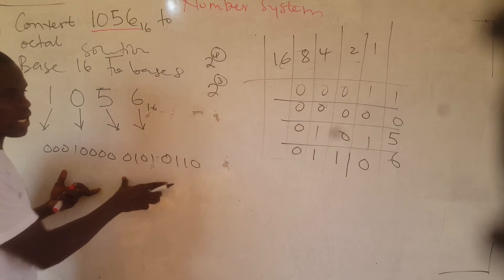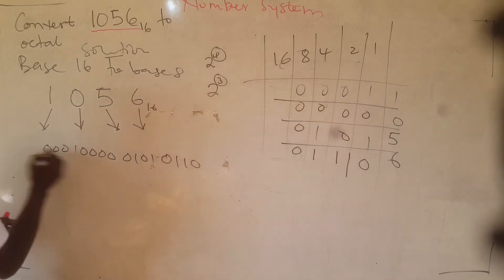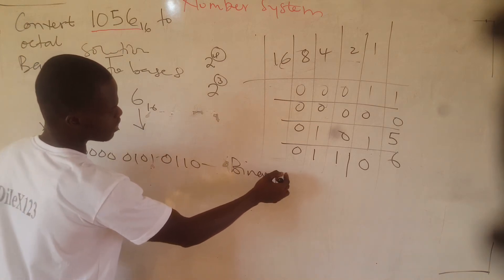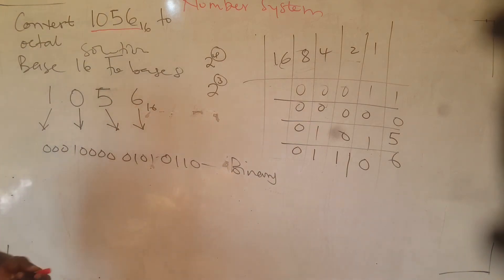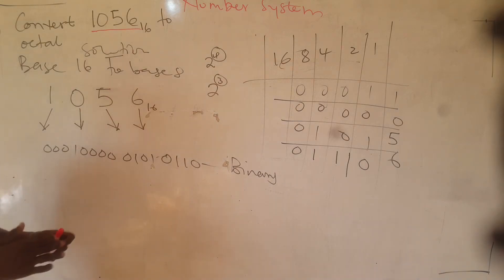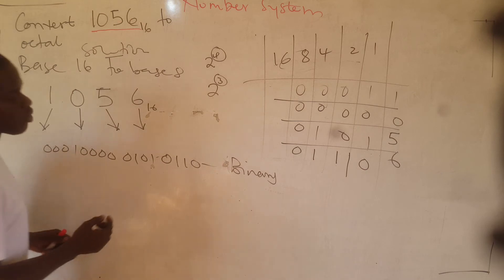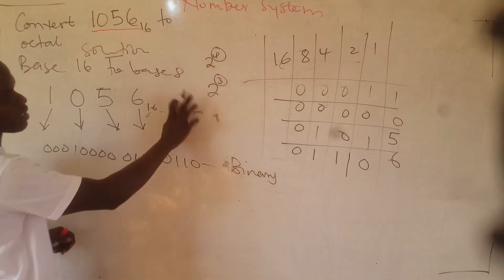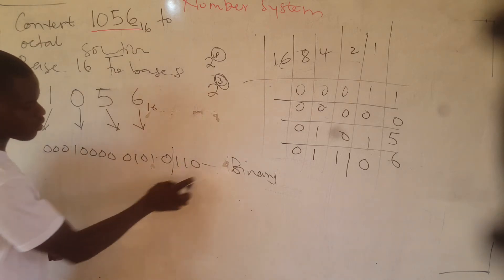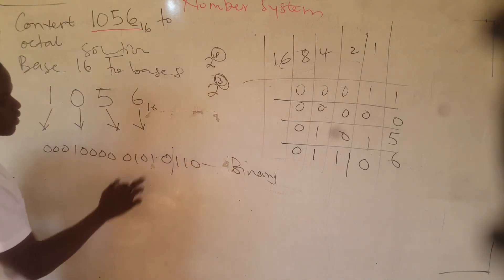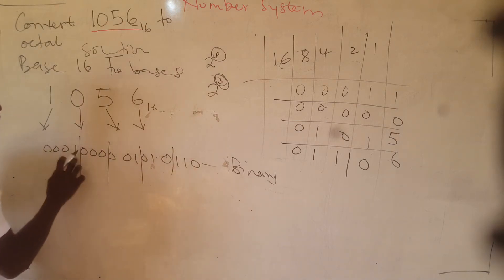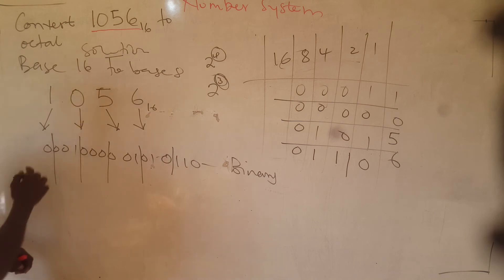Now we have to convert this binary to octal, which is base 8. Since 8 is 2 to the exponent 3, we create groups of 3 bits. So we divide the binary digits into groups of 3 from right to left: we take 3, then 3, then 3, then 3, then 3, and the remaining digits on the left get padded with zeros if needed.